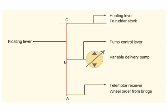The telemotor receiver moves the floating lever to A1 or A2 port or starboard according to the wheel order. When the floating lever is moved from A to A1, the pump control rod is moved from B to B1.